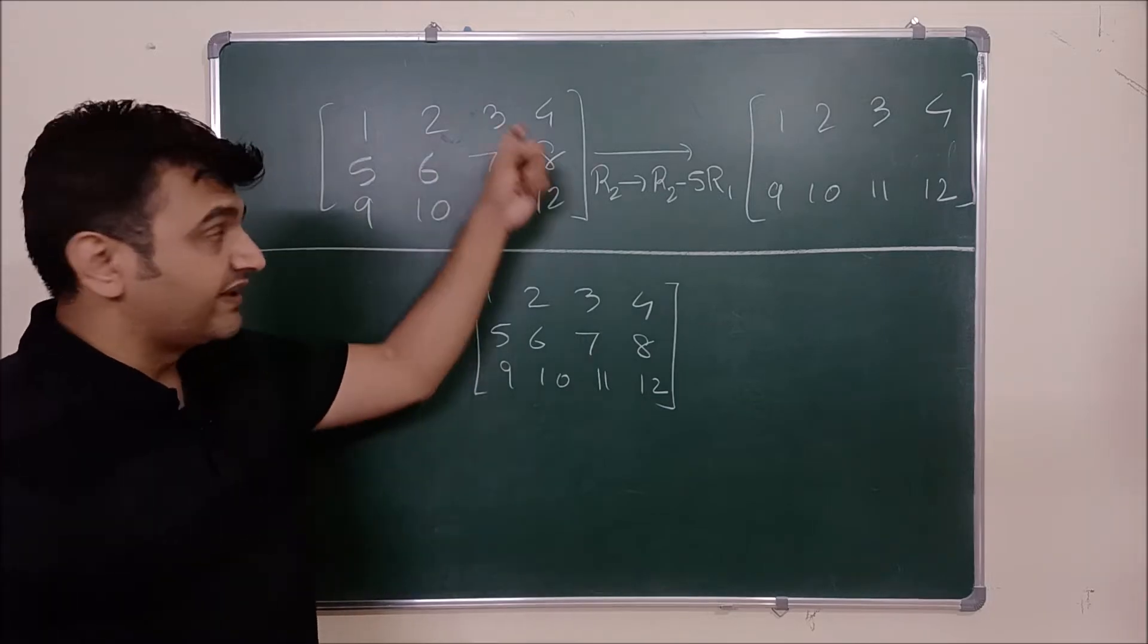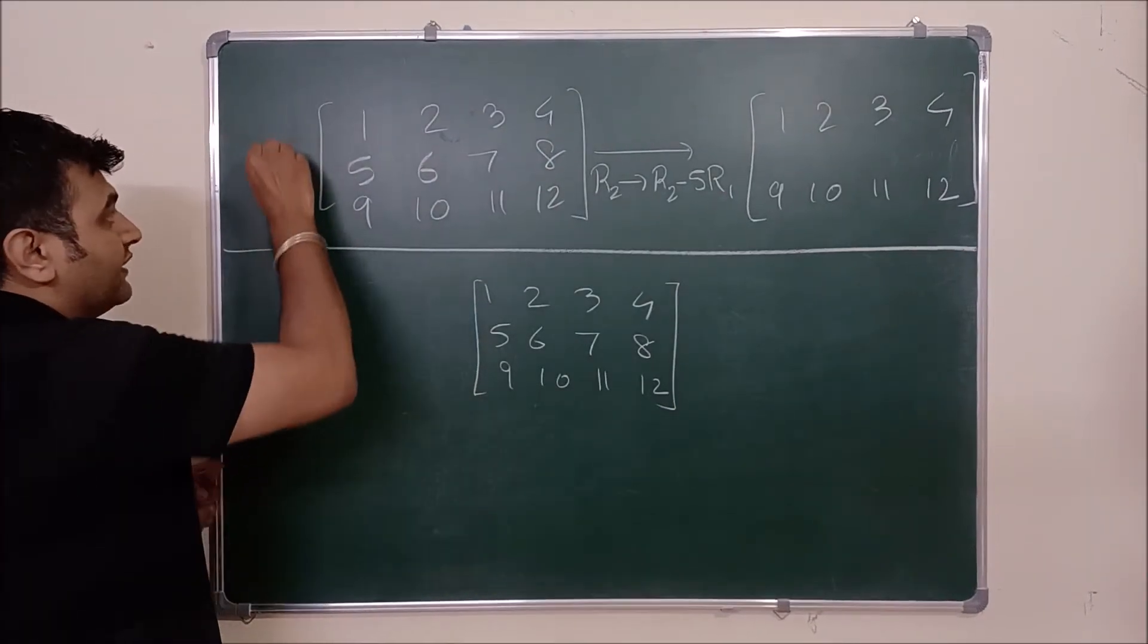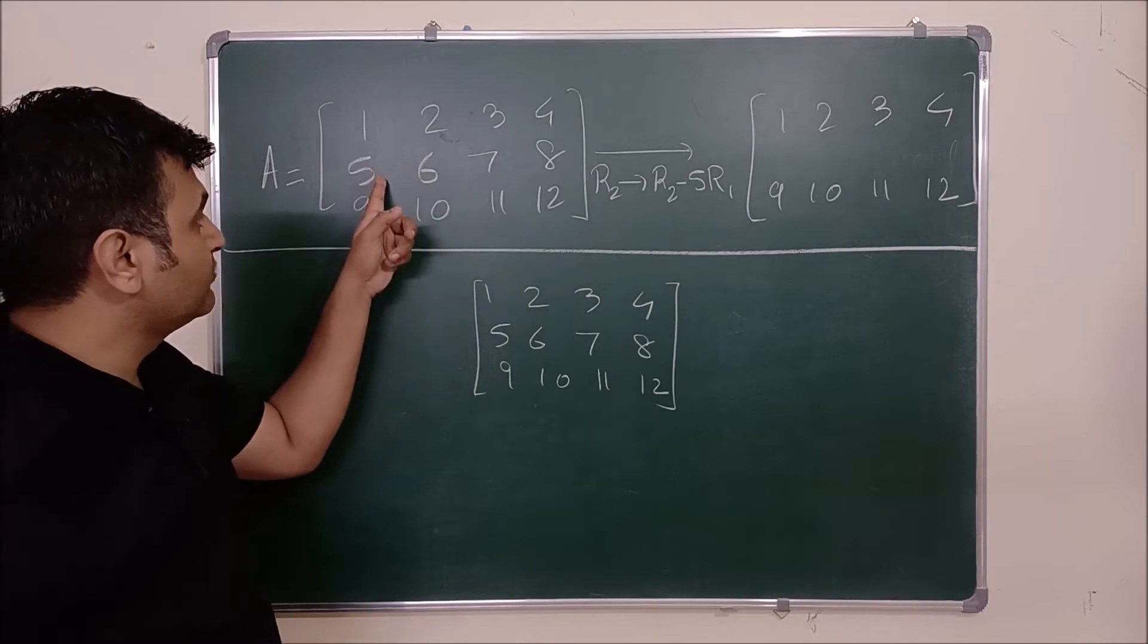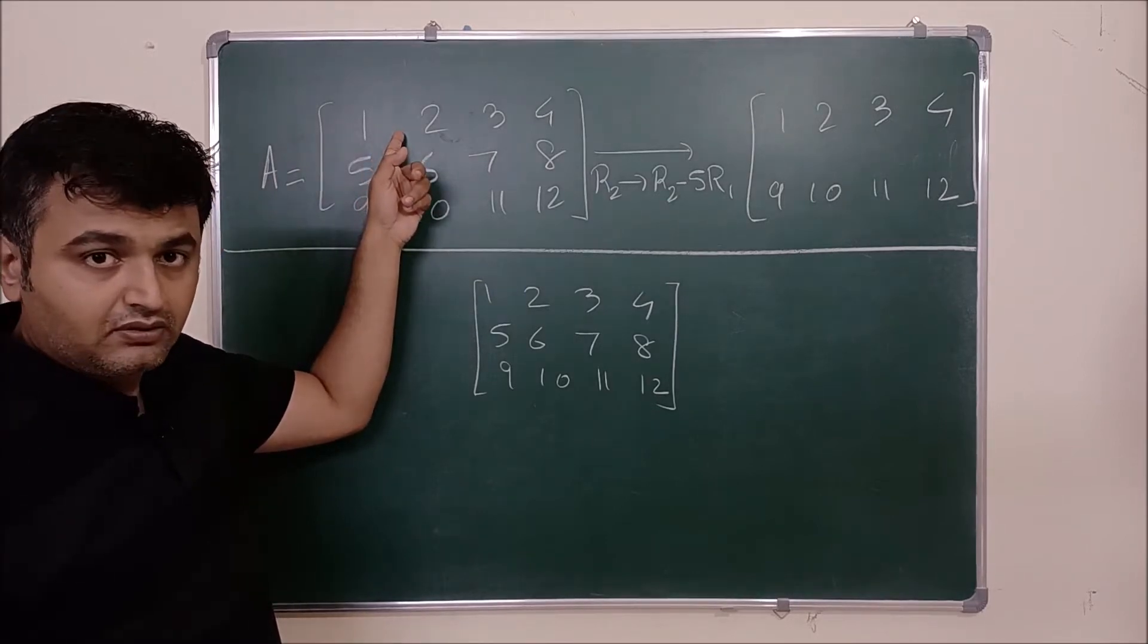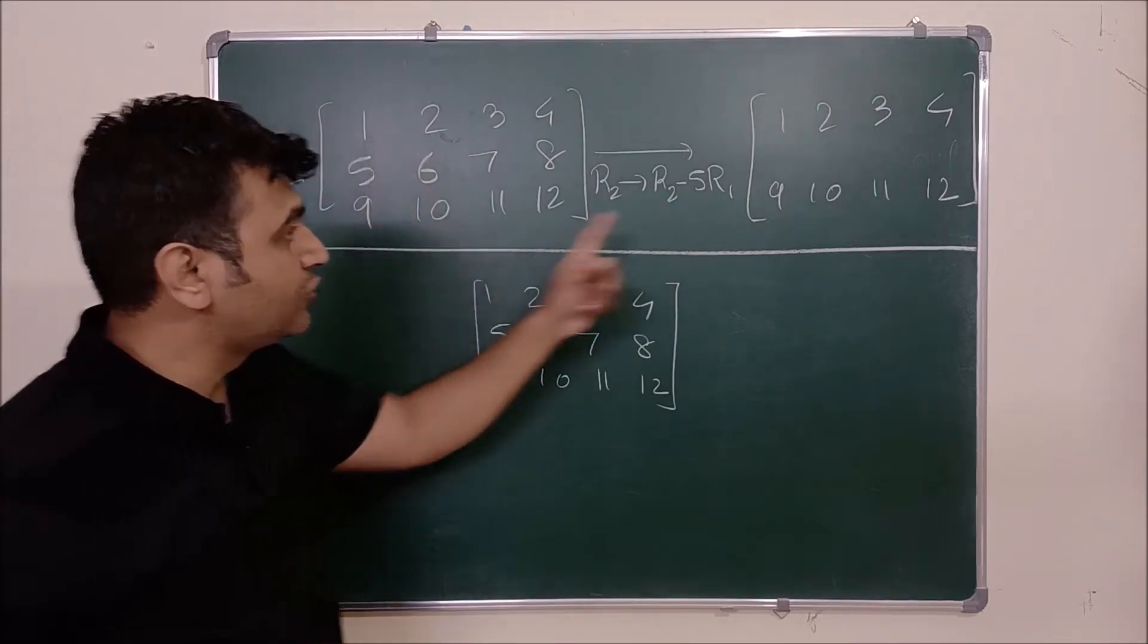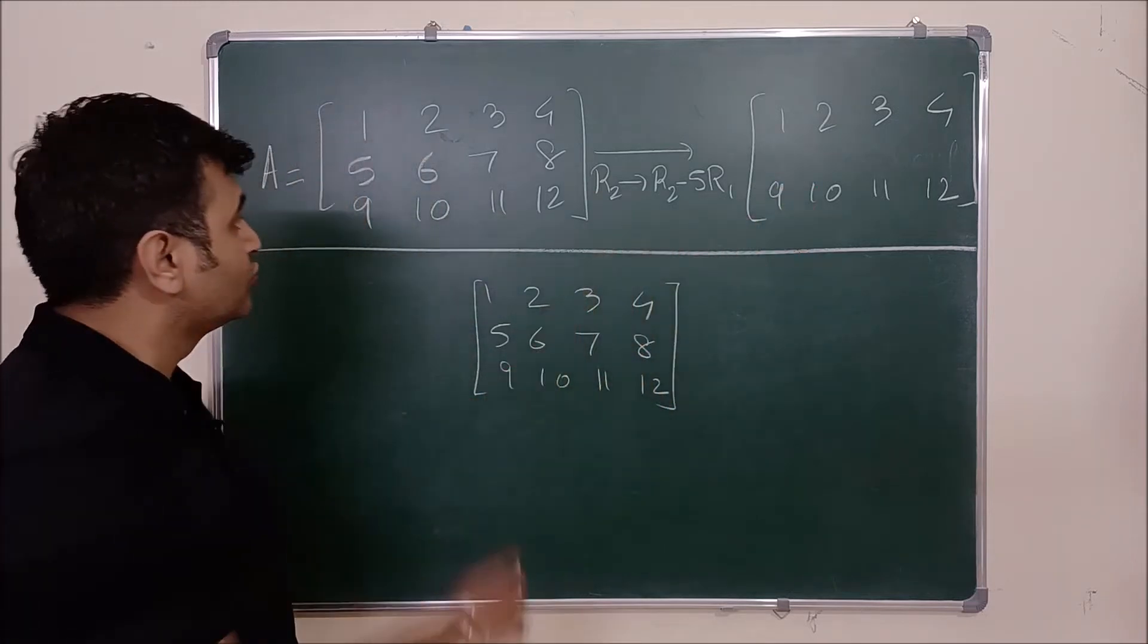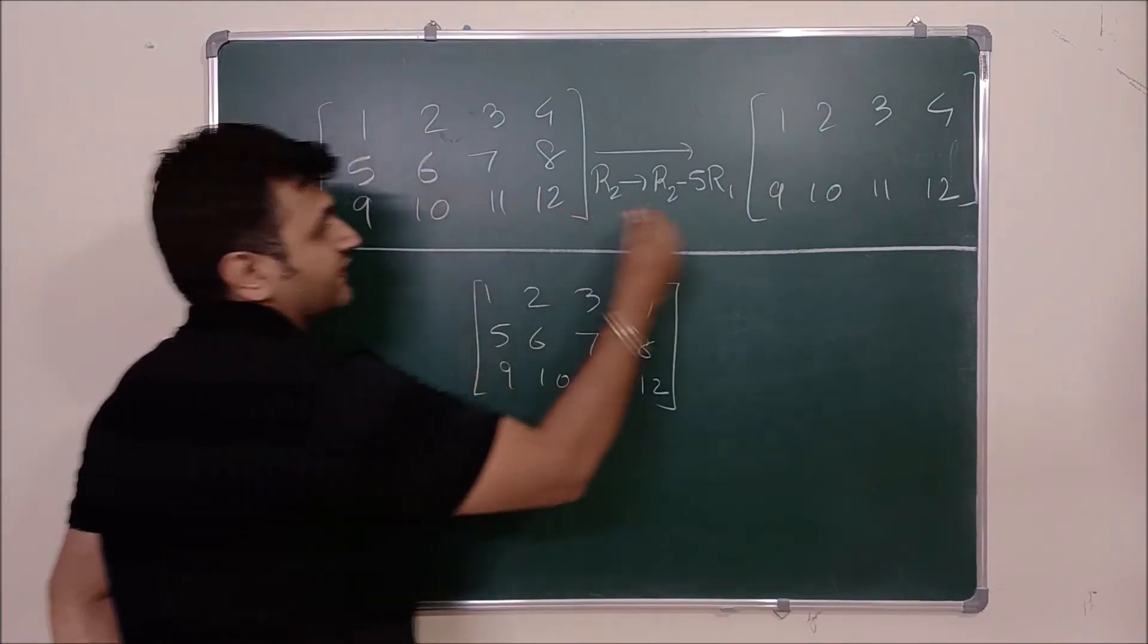Now this is a matrix. Suppose this is a matrix A given to me. Now I'm doing operation. I'm doing R2 minus 5 times R1. So my first row and third row will remain same. R2. So 5 minus 5 times 1 which is 0.